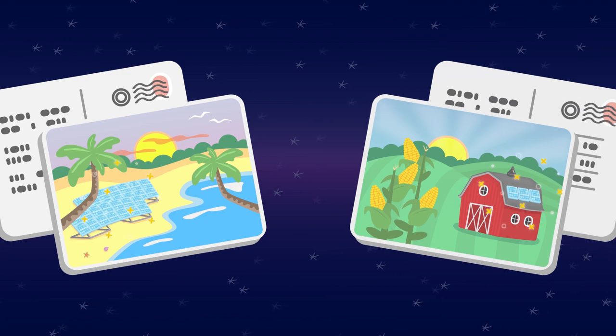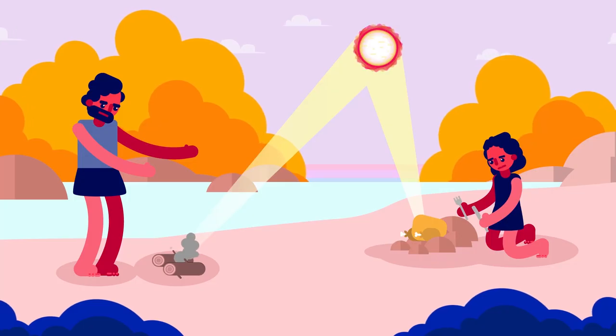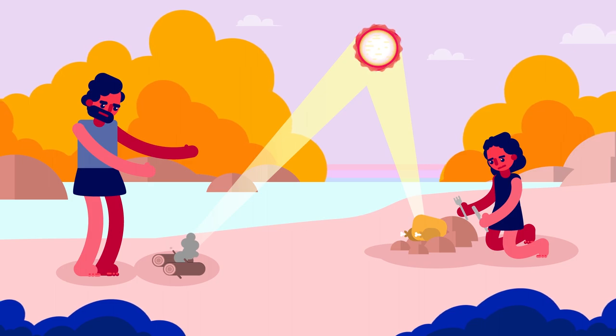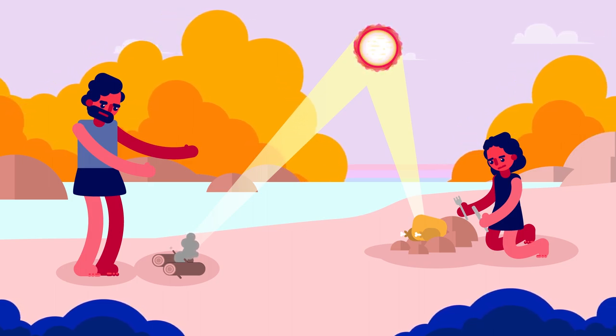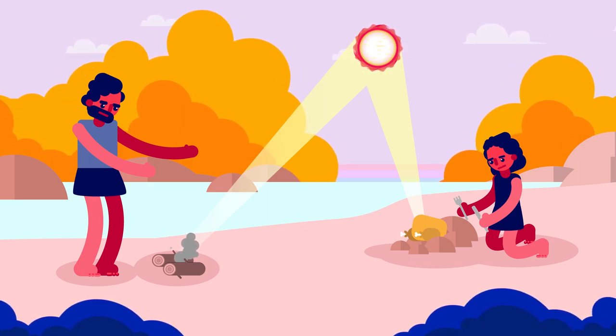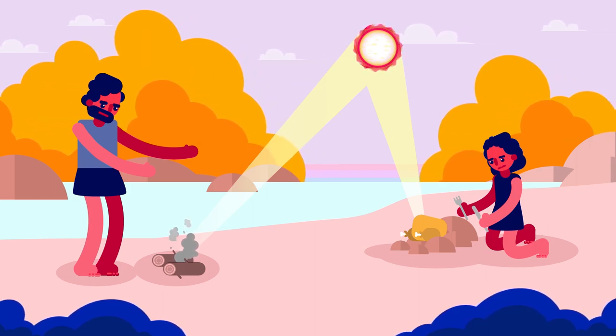So how else can we use the Sun's light and heat? We can use solar energy to turn it into electricity. Using the Sun for energy has been around a long time. Our ancestors first used glass to bend and magnify the Sun's rays to light fires.